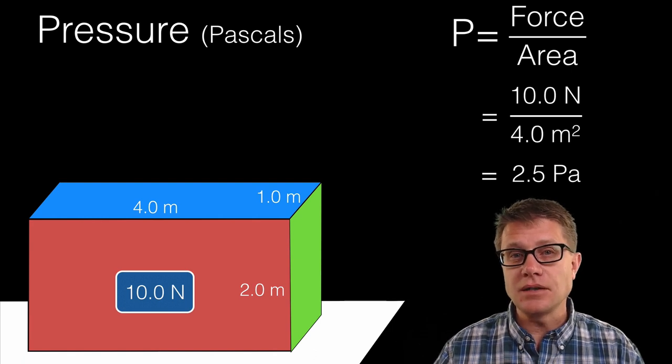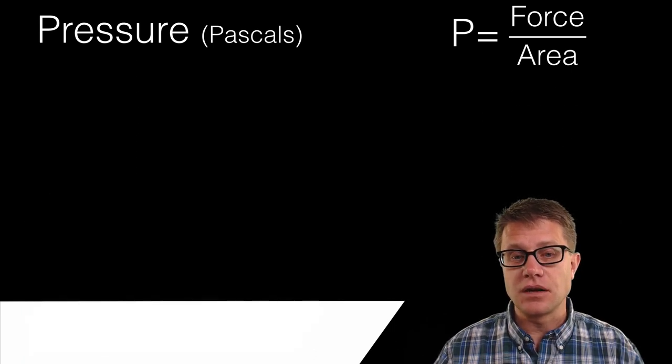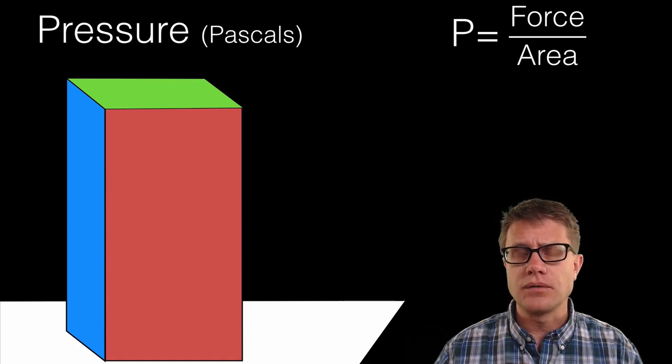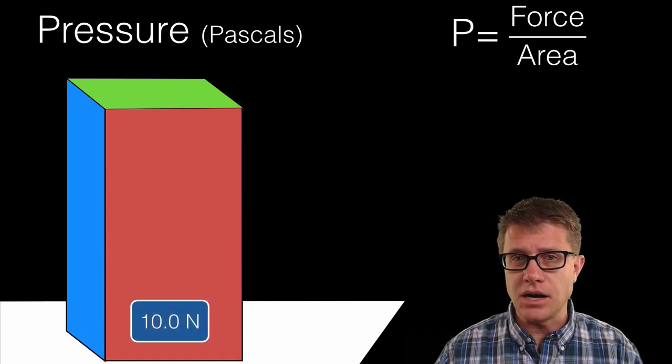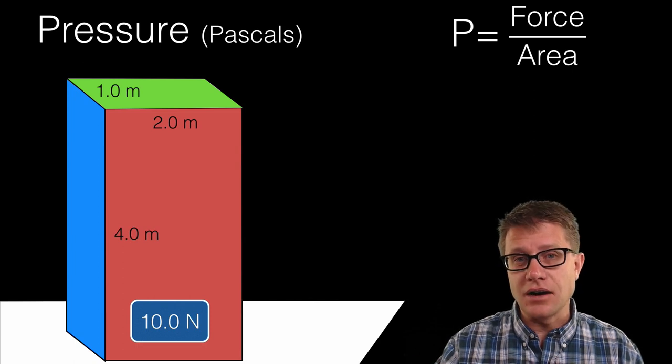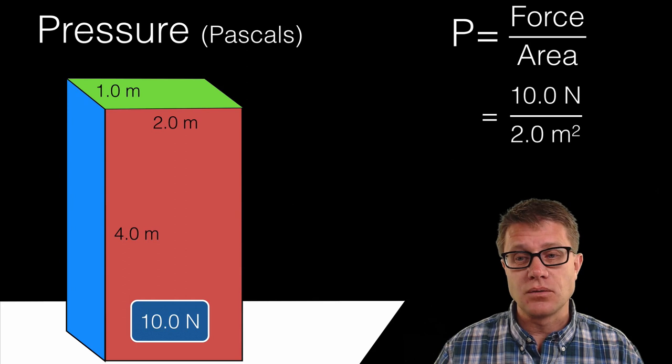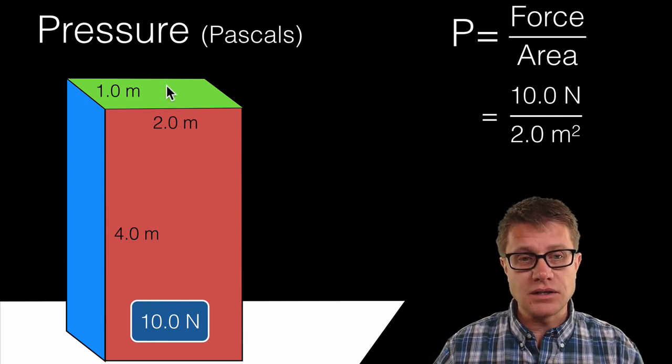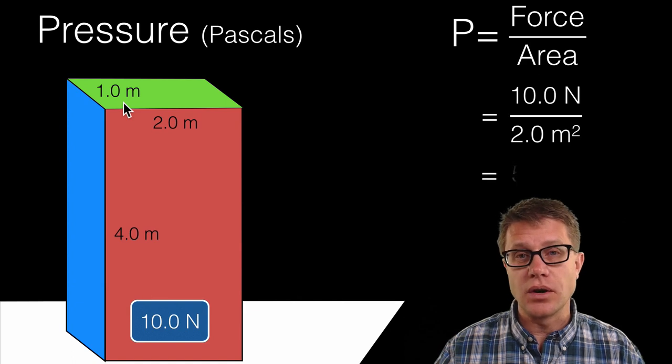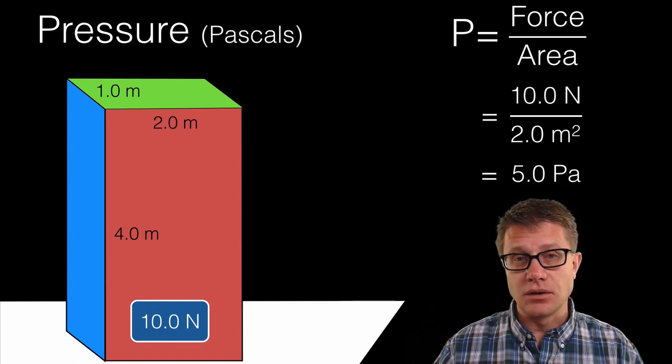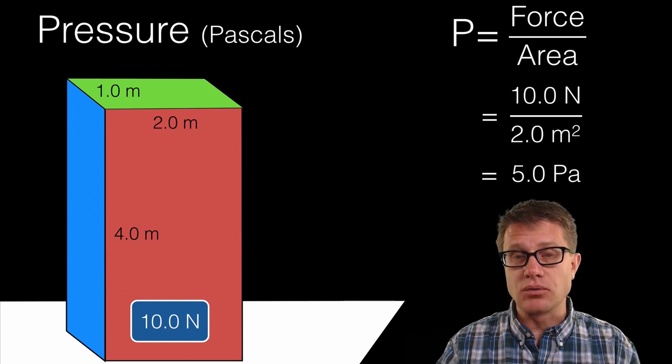If we were to take that same exact box however and turn it on its side like this, would the pressure change? Well for sure. That is because, 10 newton box again, we are pressing down on a smaller area. And so our force is still going to be 10 newtons. What is the area? It is the green side now pressing down, 2 times 1. And so our area is 2 meters squared. So our pressure is going to be 5.0 pascals. And so if it is a smaller area we are going to have a greater pressure.